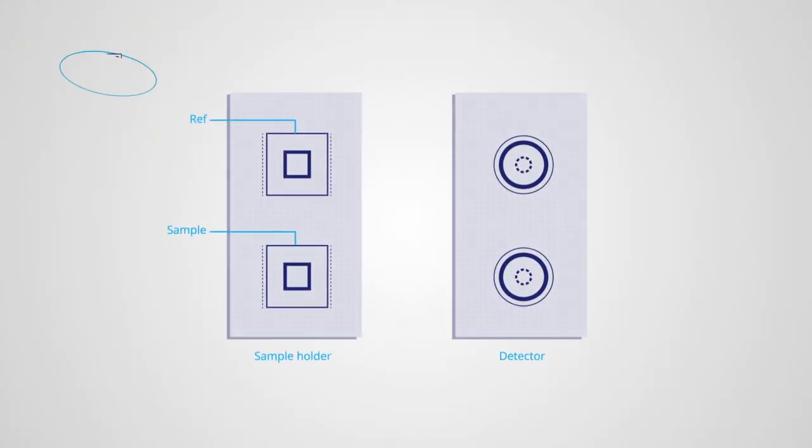If reflected, the light beam travels through the reference cell. On the other hand, if the light beam is transmitted, it travels through the sample cell.